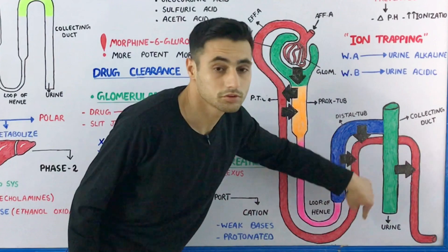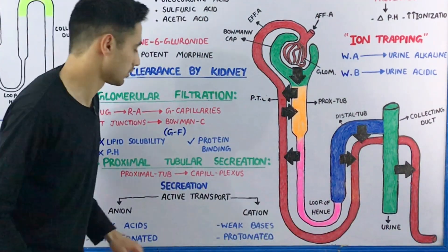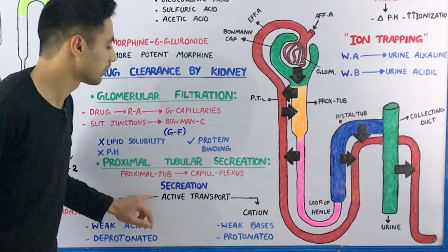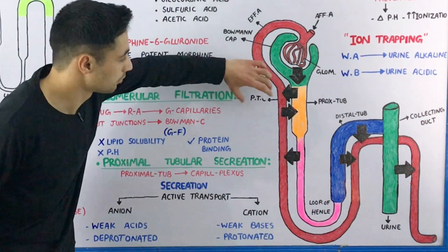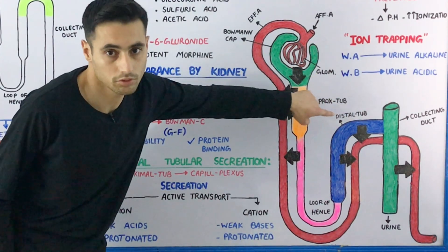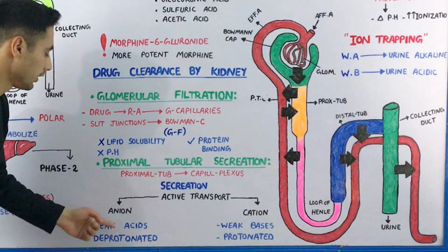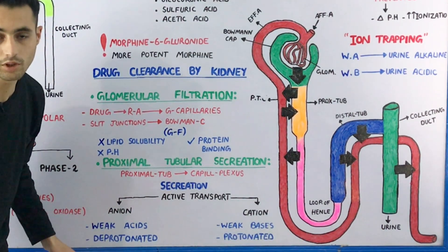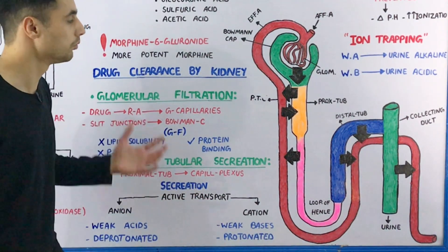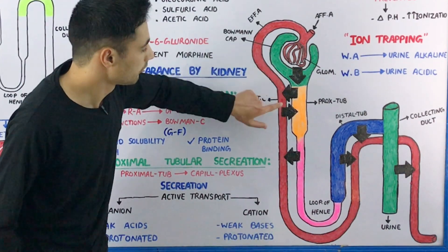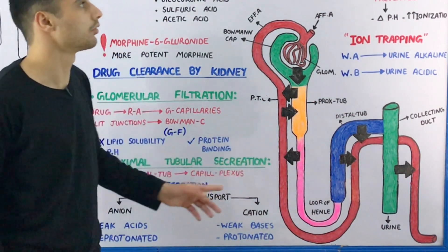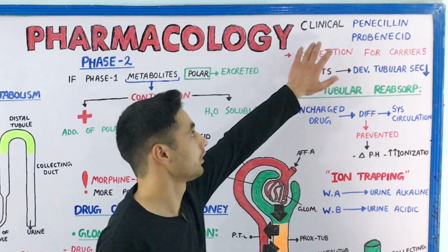The drug from the peritubular capillary network is secreted into the proximal tubule, through the loop of Henle, the distal tubule, and finally excreted in the urine. There are two processes — one for anions and one for cations — both occurring actively using carrier proteins. For anions: weak acids and the deprotonated form of the drug. For cations: weak bases and the protonated form of the drug.